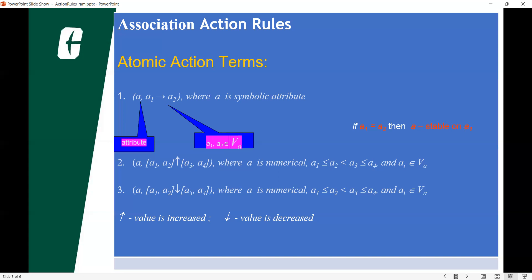Association rules at a basic level involve the use of machine learning algorithms and models to analyze data for patterns or co-occurrences in data sets. It identifies frequent if-then associations, which themselves are the association rules.